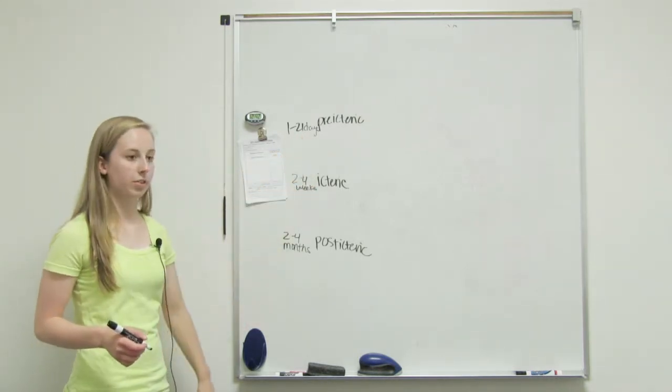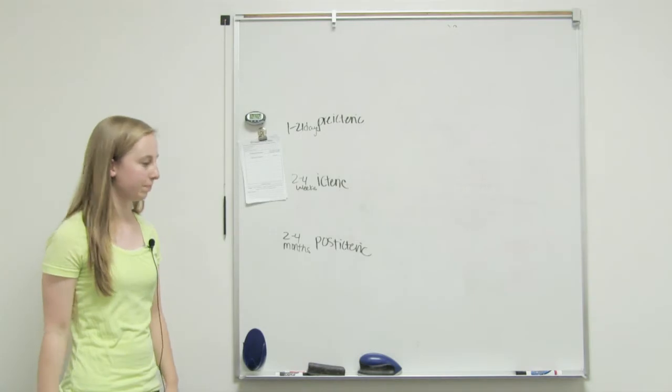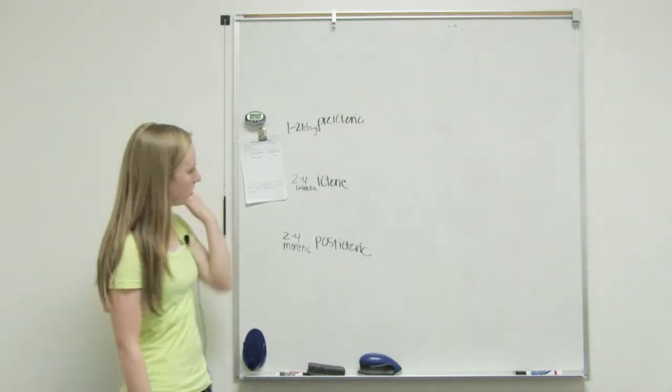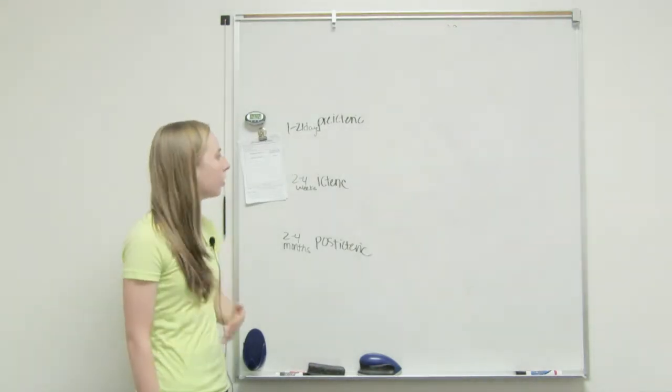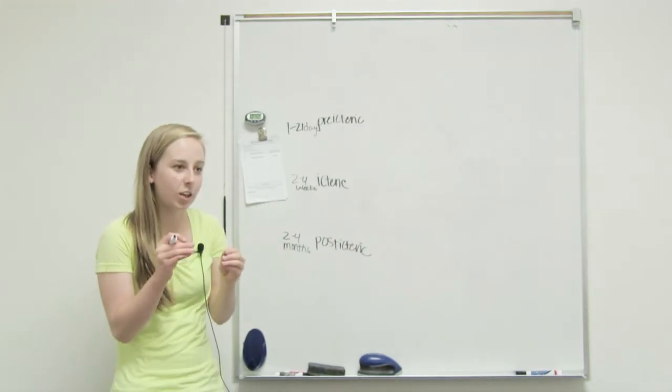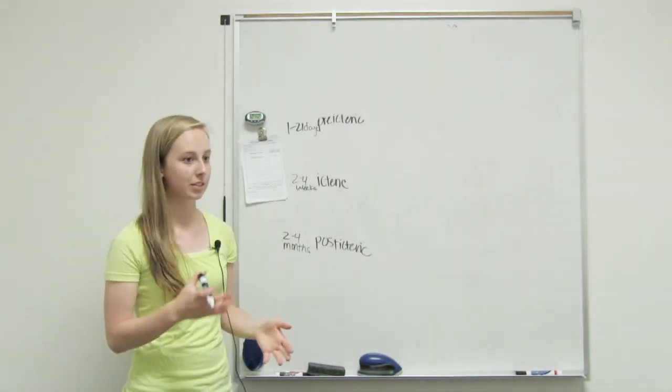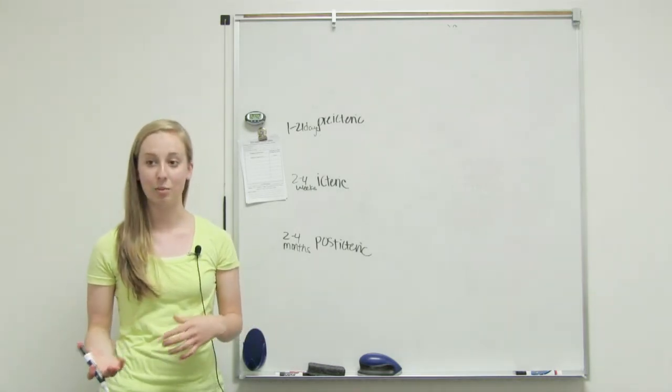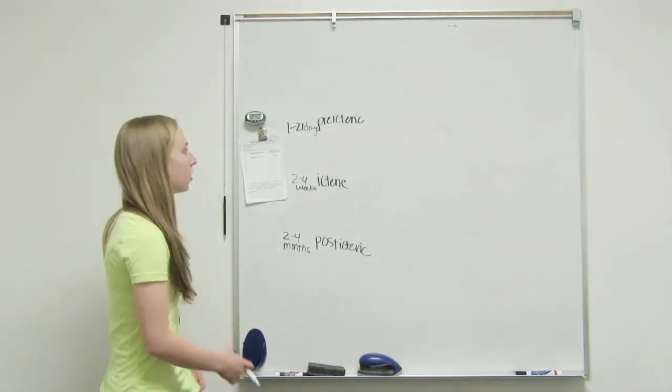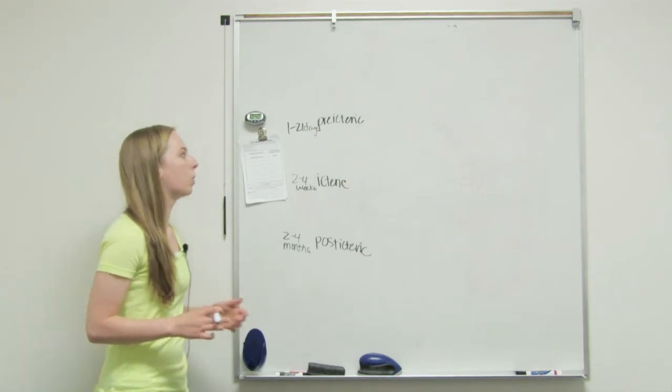But then three weeks, three months, kind of the averages for each. Just easier numbers - you don't have to know like specific like one to twenty-one days. It's signs and symptoms that really determine what phase we're in. So let's look at some signs and symptoms. What would be pre-icteric?